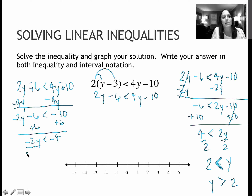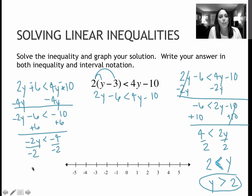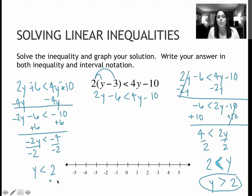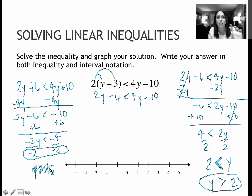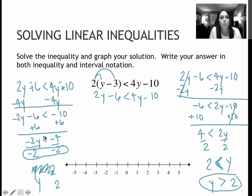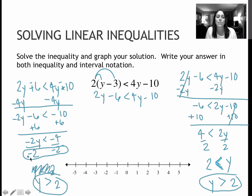Now watch what happens over here. When I divide by a negative 2 over on the first method, y is greater than 2 is the correct answer. But notice the less than sign is pointing the wrong direction. That's because whenever you multiply or divide by a negative value, your inequality is going to switch directions. So here I've divided by a negative 2, which means this less than becomes a greater than. If you divide by a negative, just remember everything gets flipped around.